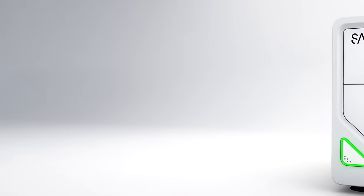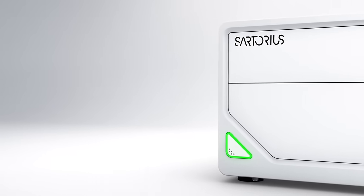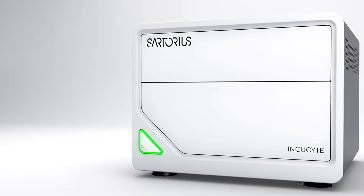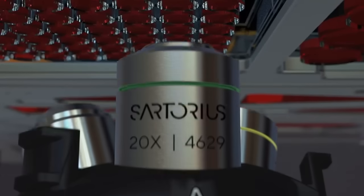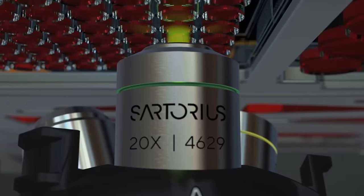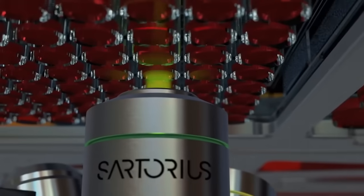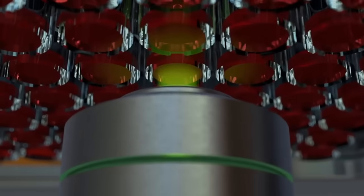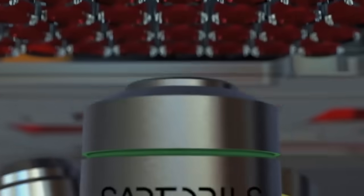The latest addition to the Incusight portfolio, the Incusight SX5 builds on our market-leading design that keeps cells stationary and undisturbed inside the incubator. Its unique patent-pending optical system offers up to five different fluorescence channels, up to three at a time in a single experiment, plus HD phase imaging.